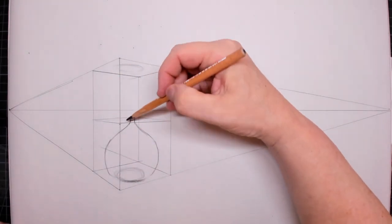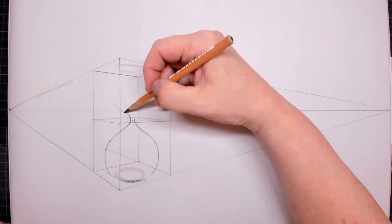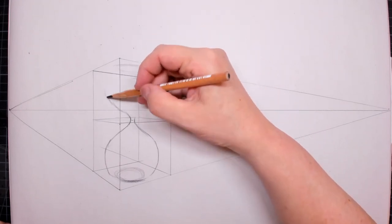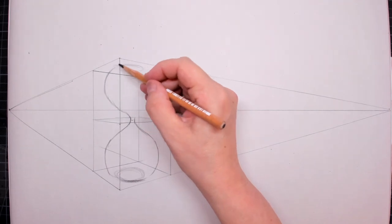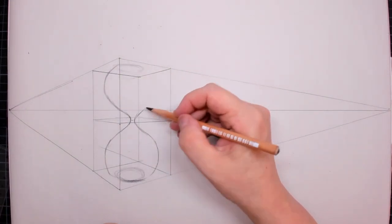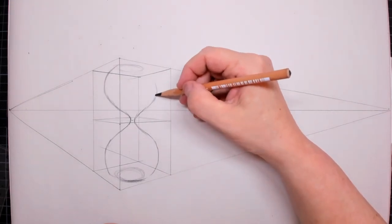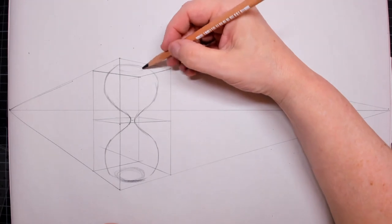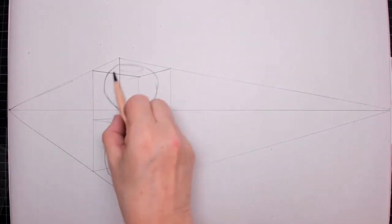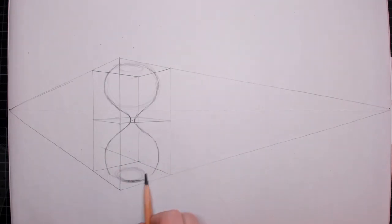Then we also have to draw the top sphere because we have to put the sand in somewhere. I cannot use a ruler anymore, so I'm simply drawing this by freehand, trying to make them as even as possible. Then you have your two glass spheres.